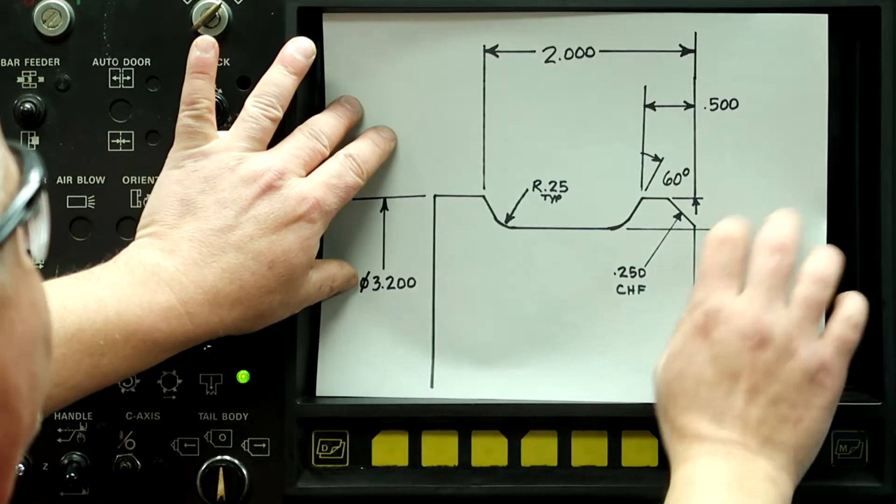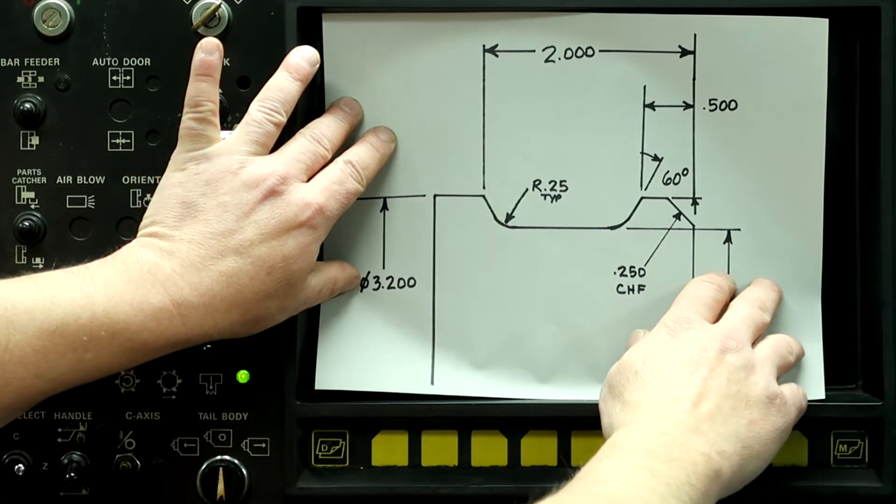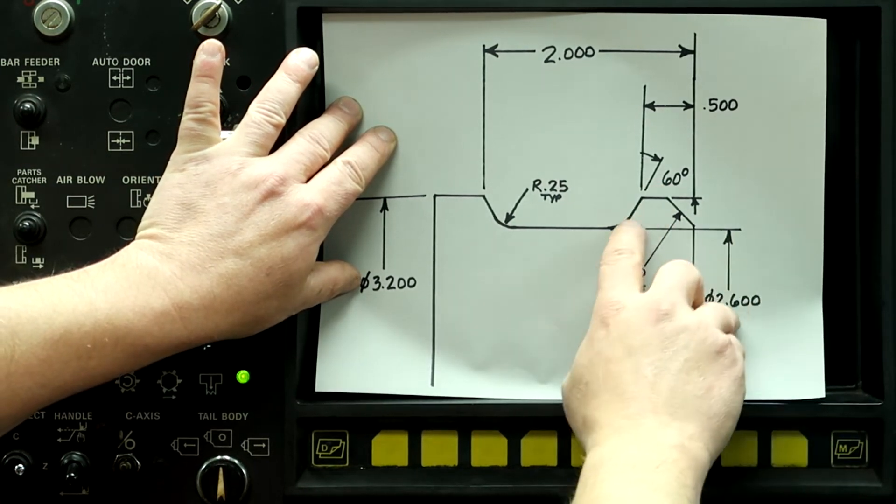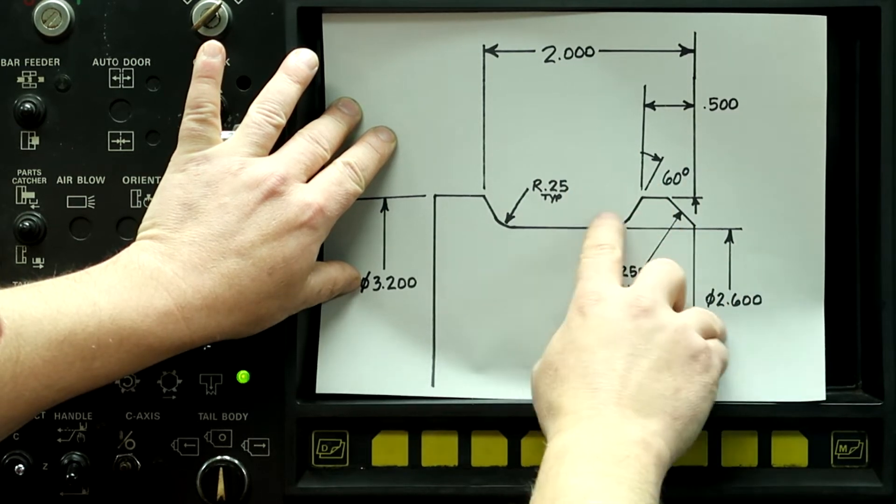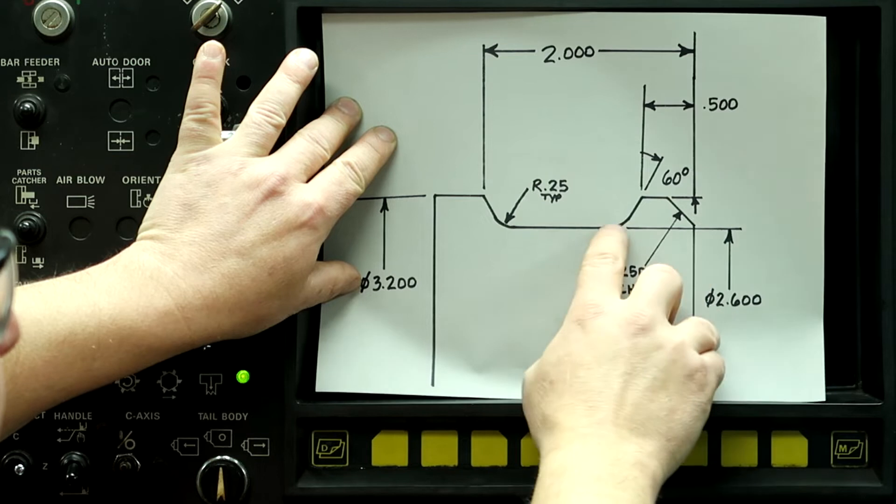Alright, here's our next work piece that we're going to be programming. This angle here is 60 degrees and we need that VVMT to get in here to machine this part.